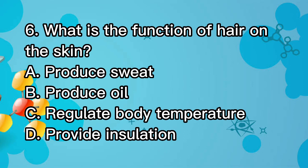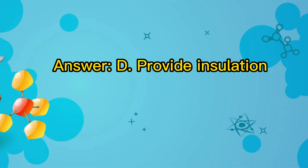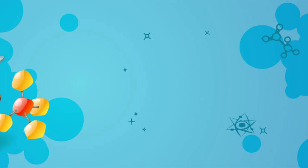Question 6. What is the function of hair on the skin? A. Produce sweat. B. Produce oil. C. Regulate body temperature. D. Provide insulation. Answer: D. Provide insulation.